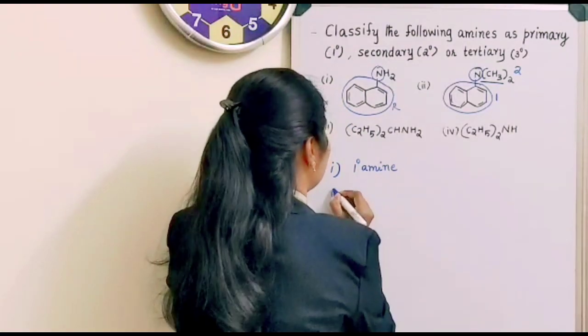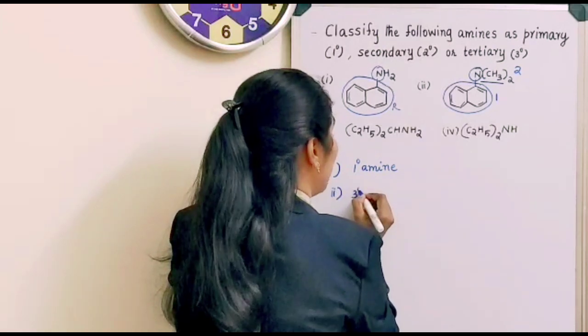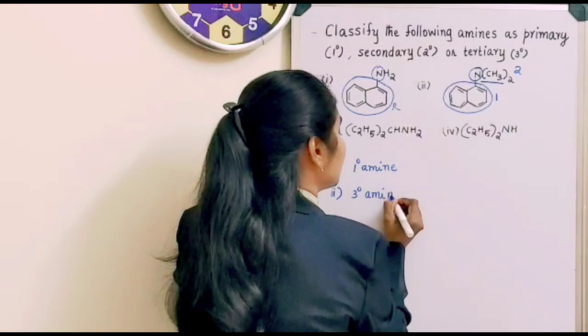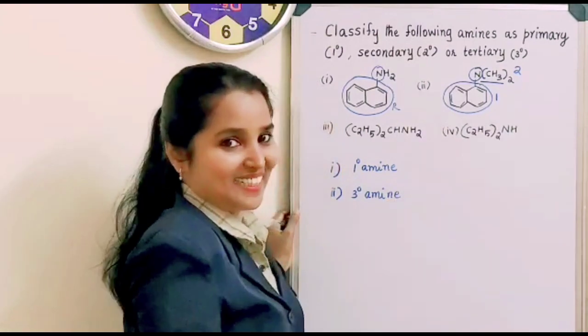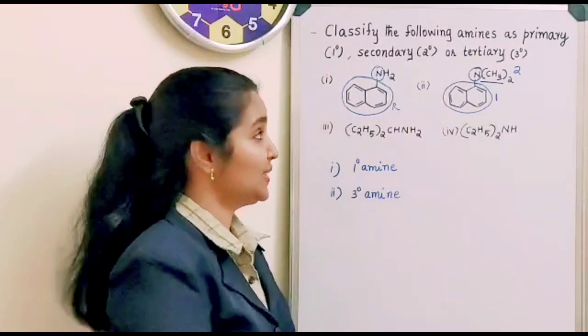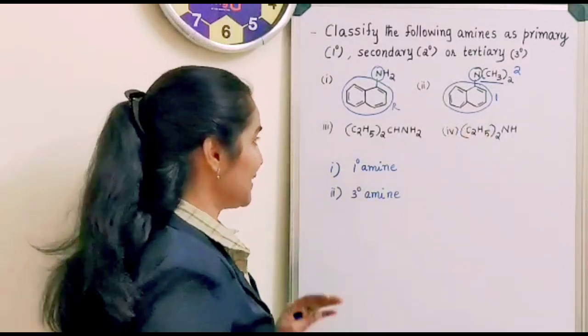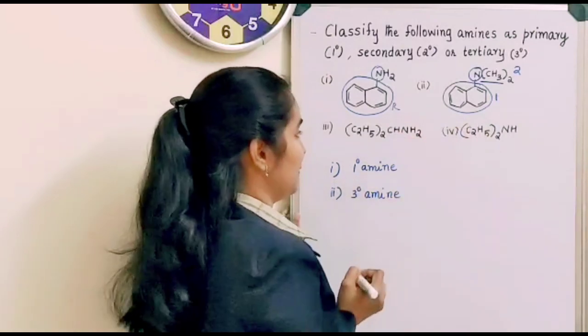So, the second one is tertiary amine. Very simple, right? No need of any confusion. Just look into nitrogen and read it whether it is primary, secondary or tertiary. That's all. Now you see, this is the one.